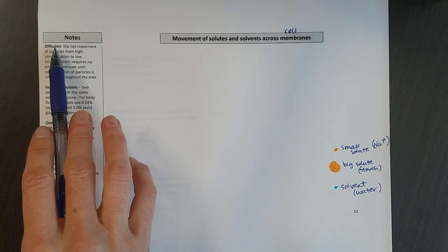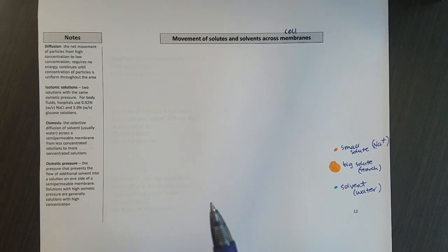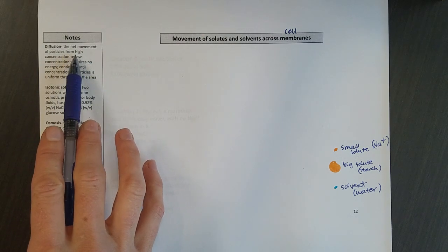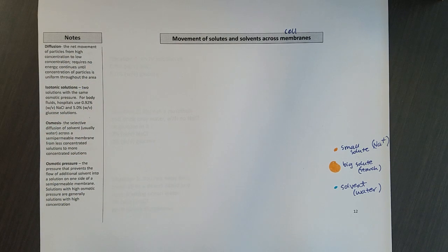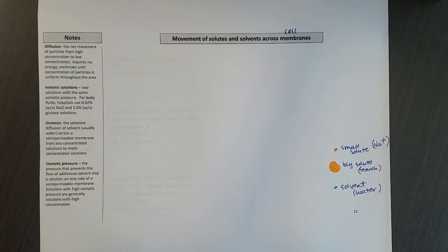Reminder about the term diffusion. If you're cooking something in the kitchen, the smell eventually works its way all throughout the whole house. It's the net movement of particles from high concentration, that's the kitchen, out to wherever those good smells are not. So the living room, the patio, the bedrooms - something at high concentration without any energy will spread out.